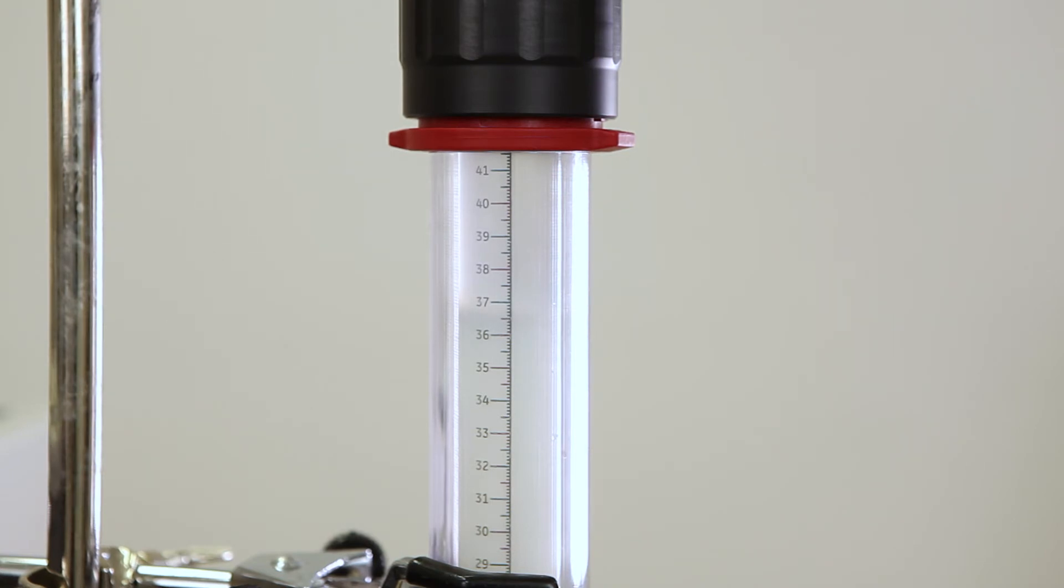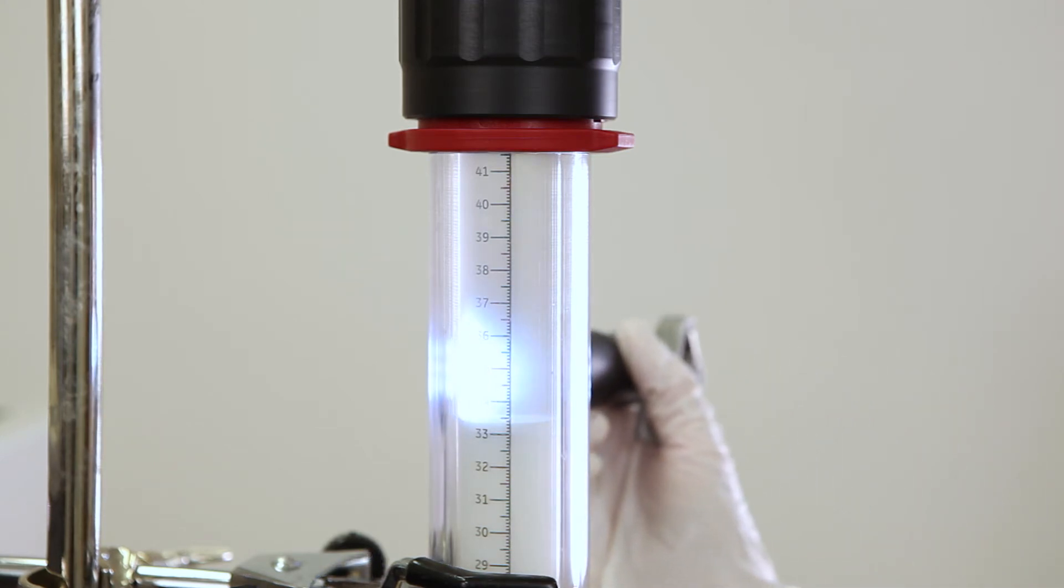As the bed will start to expand after stopping the flow, the height of the unexpanded bed should be accurately marked. If the reading is difficult due to media buildup on the column wall, a flashlight can be used.